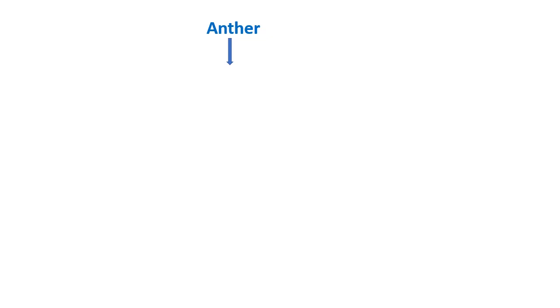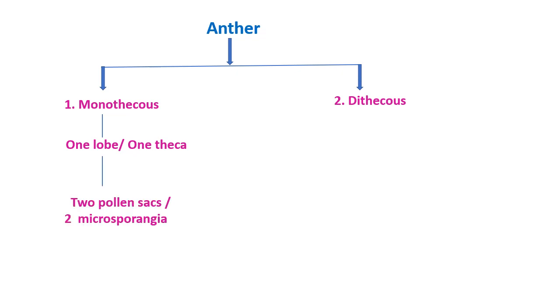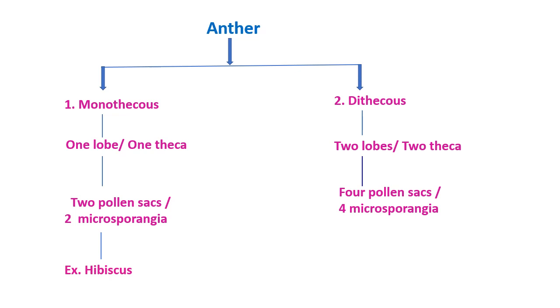To summarize the types of anthers: a monothecous anther contains one anther lobe (one theca) with two pollen sacs, also called microsporangia. The common example is hibiscus. A dithecous anther contains two anther lobes (theca), and these two lobes together contain four pollen sacs, also called microsporangia. The common example of a dithecous anther is gulmohar, and it is found in most angiospermic flowers.